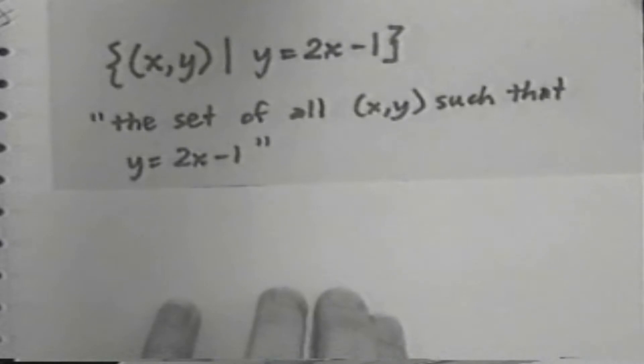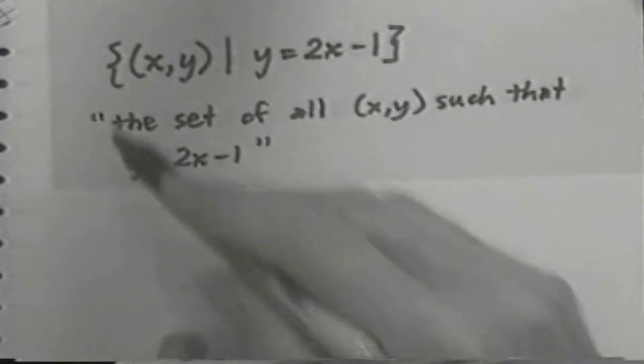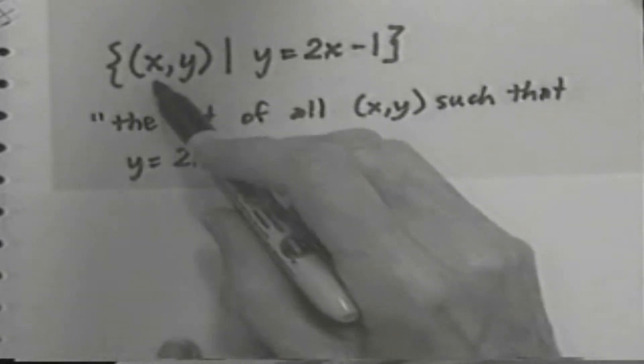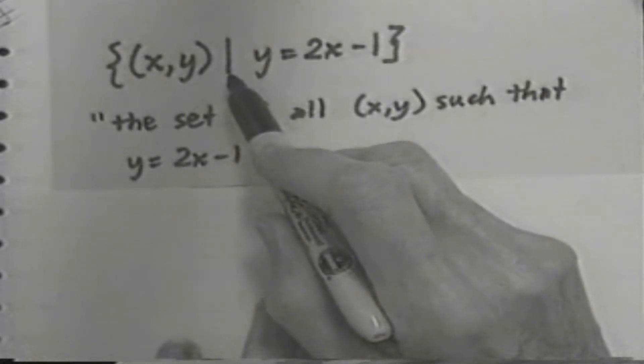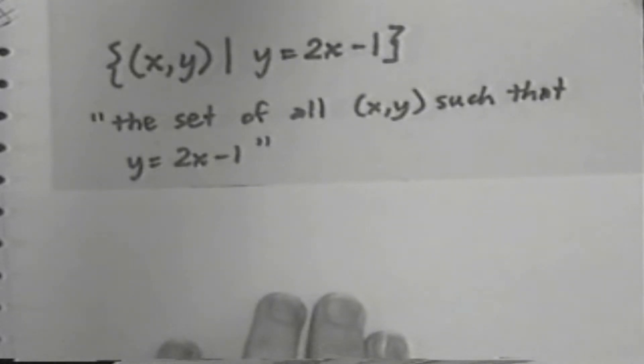So, the mathematical symbolism saves you words, the set of all ordered pairs x, y, such that, the vertical bar means such that, y equals 2x minus 1.